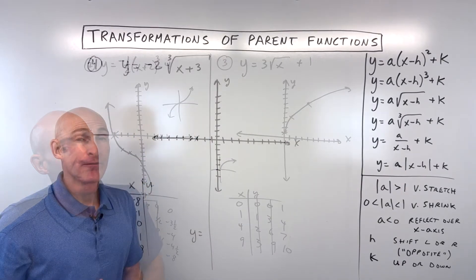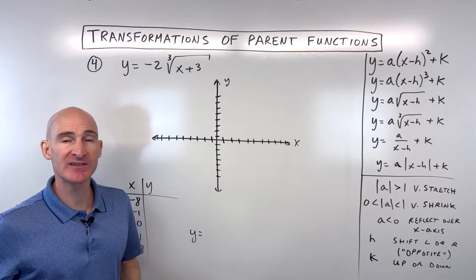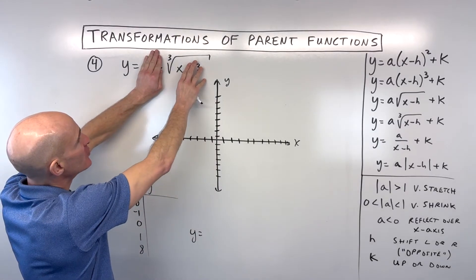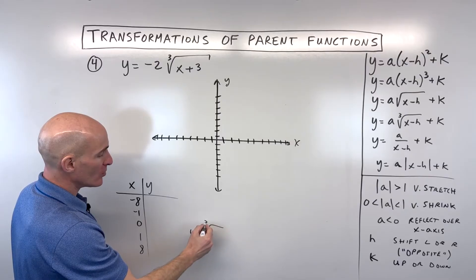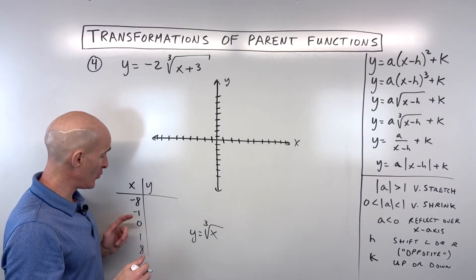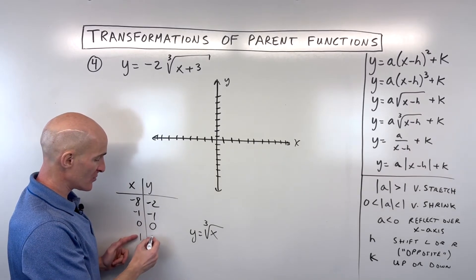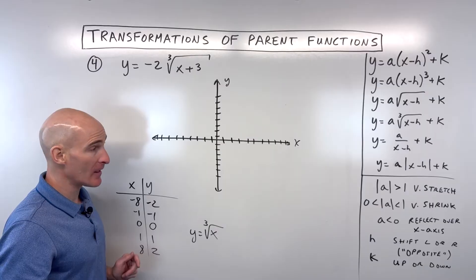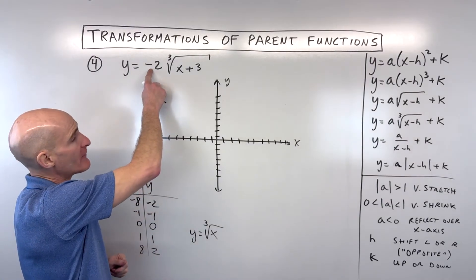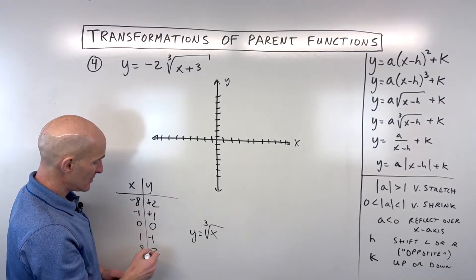Example 4 — try to pause and do this yourself first. The parent function: if you cover up the -2 and the 3, you're left with y = ∛x. Good key points: ∛(-8) = -2, ∛(-1) = -1, ∛0 = 0, ∛1 = 1, ∛8 = 2. The negative reflects it over the x-axis — multiply all y values by -1 to change their signs.